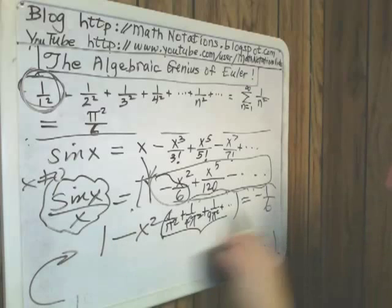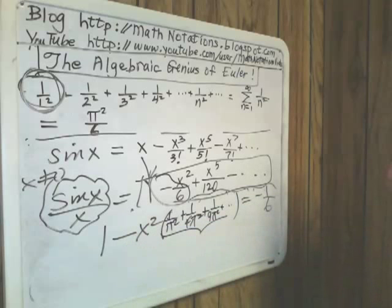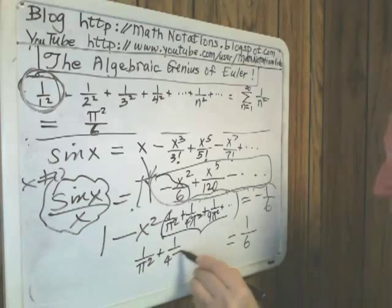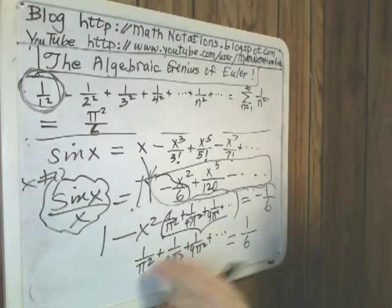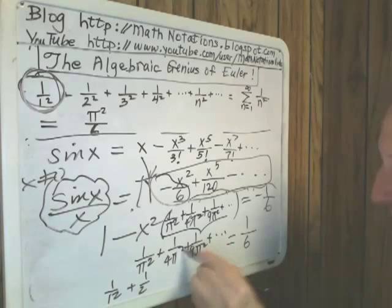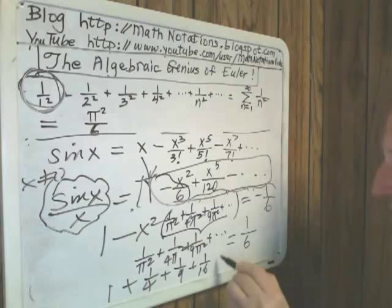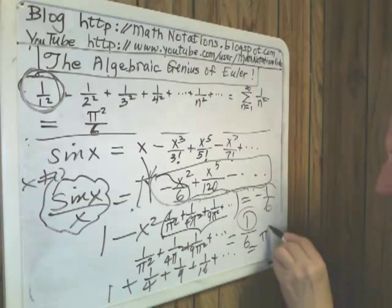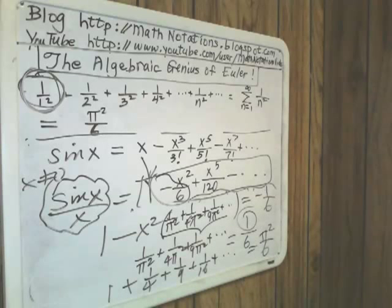And again, he didn't worry about the fact that these series never ended. He said if this is equal to that, then we would have 1 sixth equal to 1 over pi squared plus 1 over 4 pi squared plus 1 over 9 pi squared, et cetera. And so he multiplied both sides by pi squared. And he got 1 over 1 squared plus 1 over 2 squared. Well, I'll write it as 1 plus 1 fourth plus 1 ninth plus 1 sixteenth plus et cetera. And the pi squared comes up here. And there you have the derivation for our Euler formula for pi squared over 6.